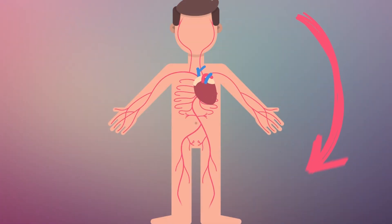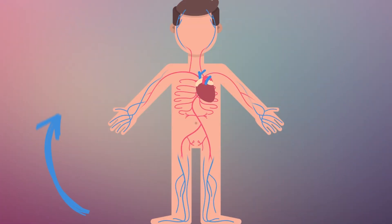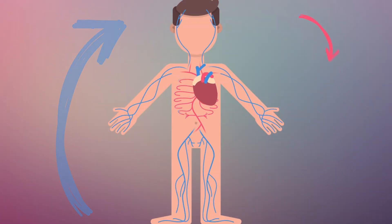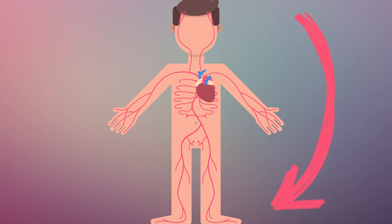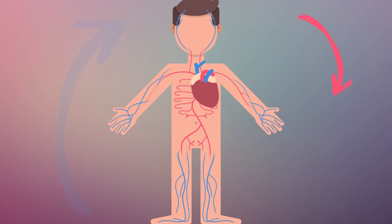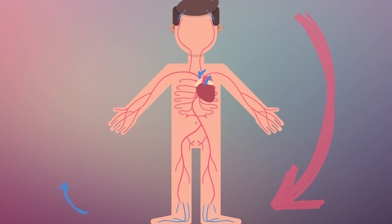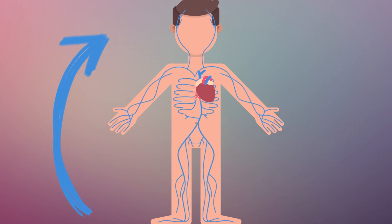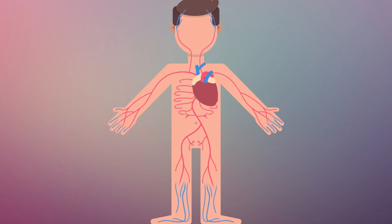As this trip is circular — that is to say, it has no end — the blood starts the trip back to the heart to regain nutrients and oxygen.